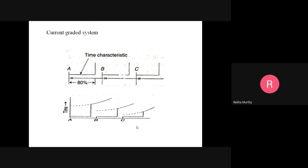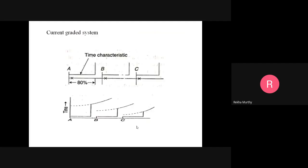In the combination of current and time grading scheme, widely used for protection of distribution lines, IDMT relays are employed combining features of both current and time grading. They have both current and time setting arrangements. The current setting is made according to the fault current level of the particular section, with relays set to pick up at progressively higher current levels towards the source side. Time settings are also done in progressively increasing order towards the source, with the difference in operating times of two adjacent relays kept around 0.5 seconds.